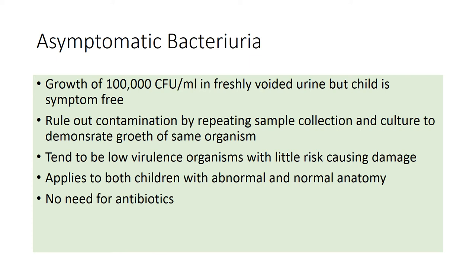It's important to mention that even if you get growth of more than 10,000 colony forming units in freshly voided urine but the patient is symptom-free, that would not be considered a urinary tract infection — that is defined as asymptomatic bacteriuria. It's important to rule out contamination by repeating the sample collection and sending the specimen for culture, demonstrating growth of the same organism. Studies have shown that organisms causing asymptomatic bacteriuria tend to be of low virulence and therefore have little risk of causing renal scarring, and this applies in both children with abnormal and normal anatomy. So there is no need to give antibiotics for asymptomatic bacteriuria.